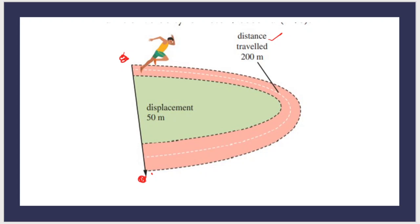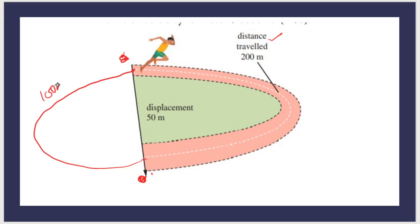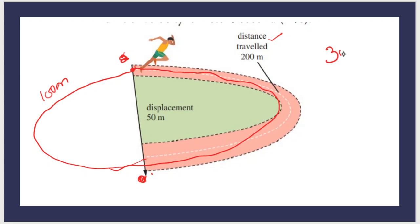Let us consider another case. If the athlete starts from this position and ends at the same position, running 200 meters along one path and then another 100 meters back — the total distance is 200 plus 100, which equals 300 meters.